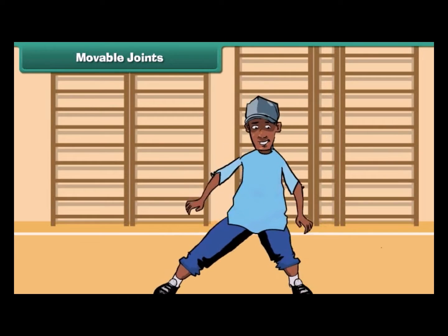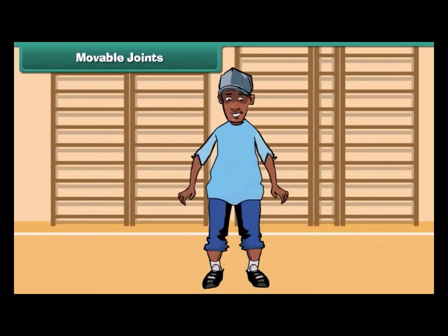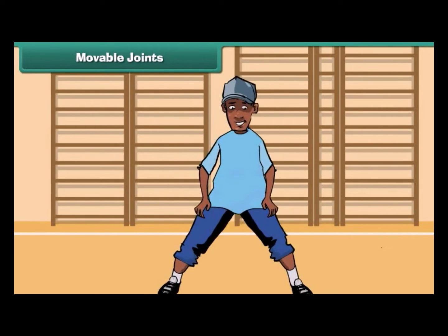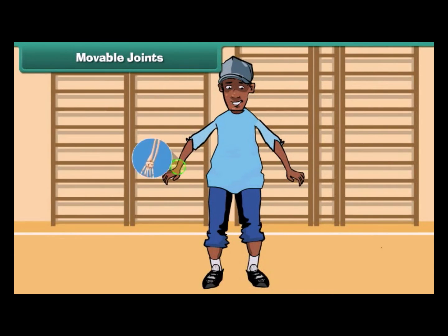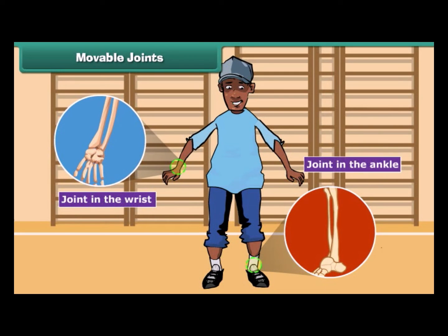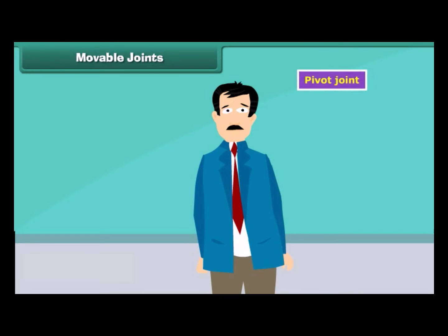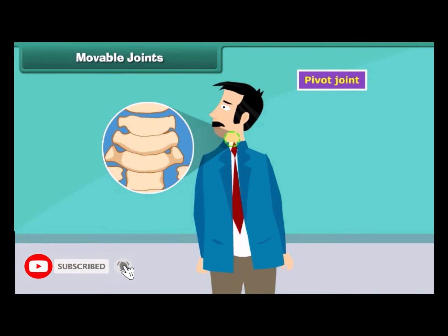Friends, have you ever noticed that we can move our hands and feet in different ways? The joints which allow such movements are called gliding joints. Joints in the wrist and the ankle are examples of these joints. Our neck allows us to turn our head on both sides — this is possible because of the pivot joint.